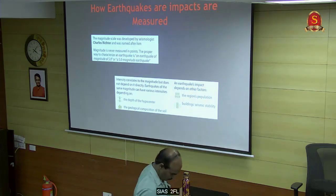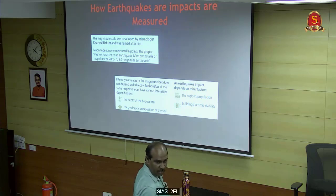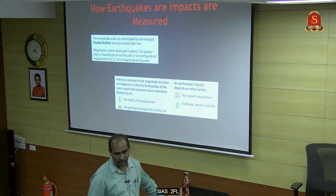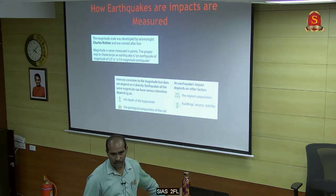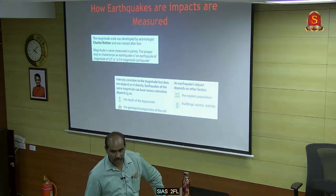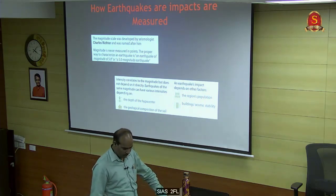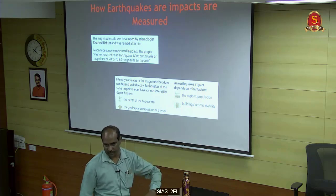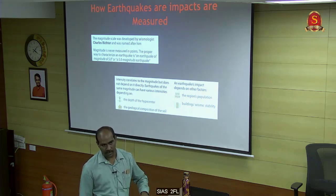For example, an earthquake happens at some epicenter location. I am not measuring the earthquake at the epicenter - I am measuring its effect at a different location. This is the intensity. The soil may amplify the ground shaking. An earthquake may happen 10, 15, 20, or 70 km below the earth.